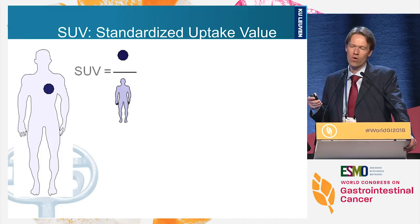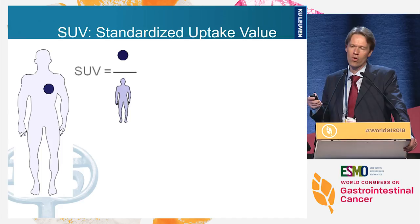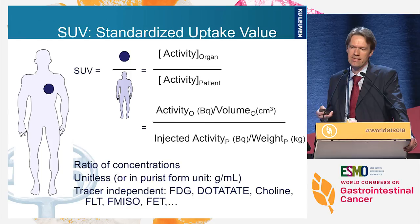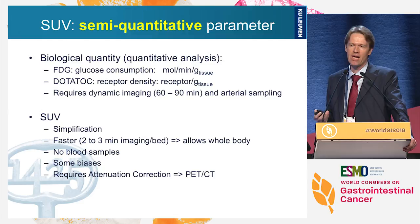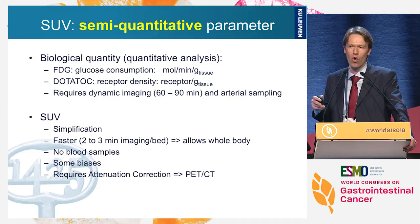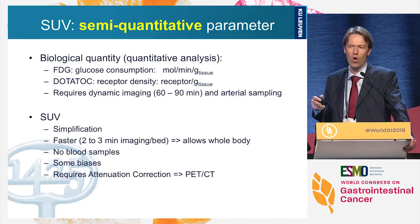The SUV formula is independent of tracer — the same for FDG, dotatate, choline, or F-MISO. It's a semi-quantitative parameter; it doesn't tell you how many grams of glucose are burned per time unit. We can do that but it requires very long imaging. SUV is a simplification allowing faster whole-body imaging without blood samples, though there are some caveats.